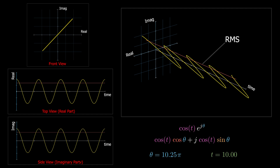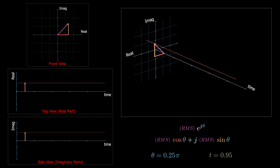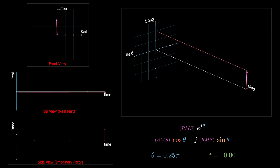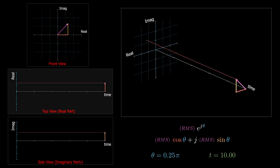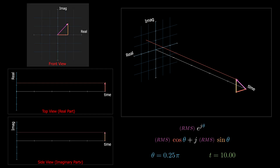If we replace the time-dependent amplitude with the average value, we get a complex number with constant amplitude that doesn't change with time, rotated some angle theta in the complex plane. The average is a complex number — a constant value that doesn't change with time — rotated some angle theta. It has a real part, the projection on the real axis, and an imaginary part, the projection on the imaginary axis.